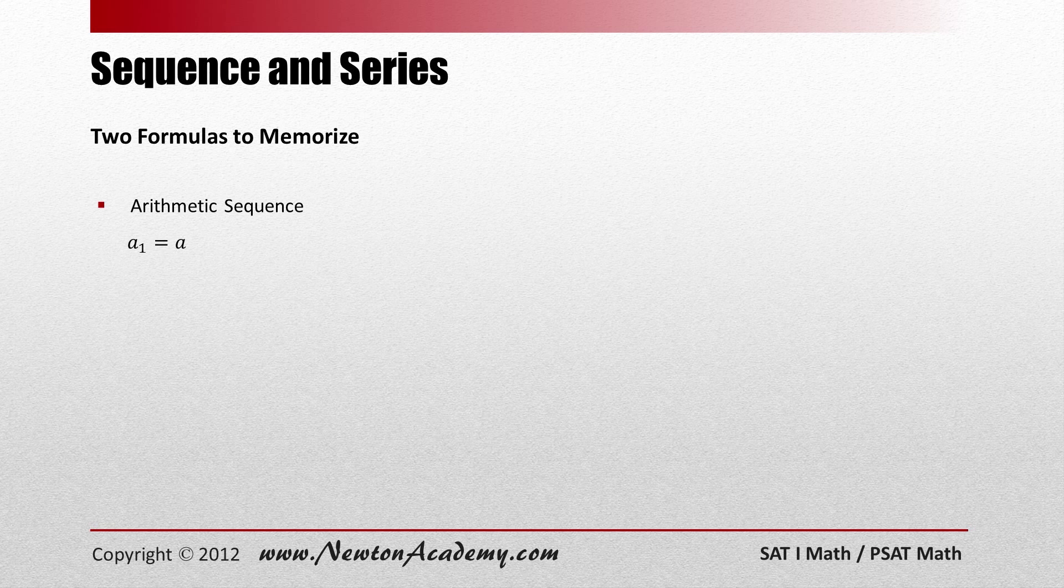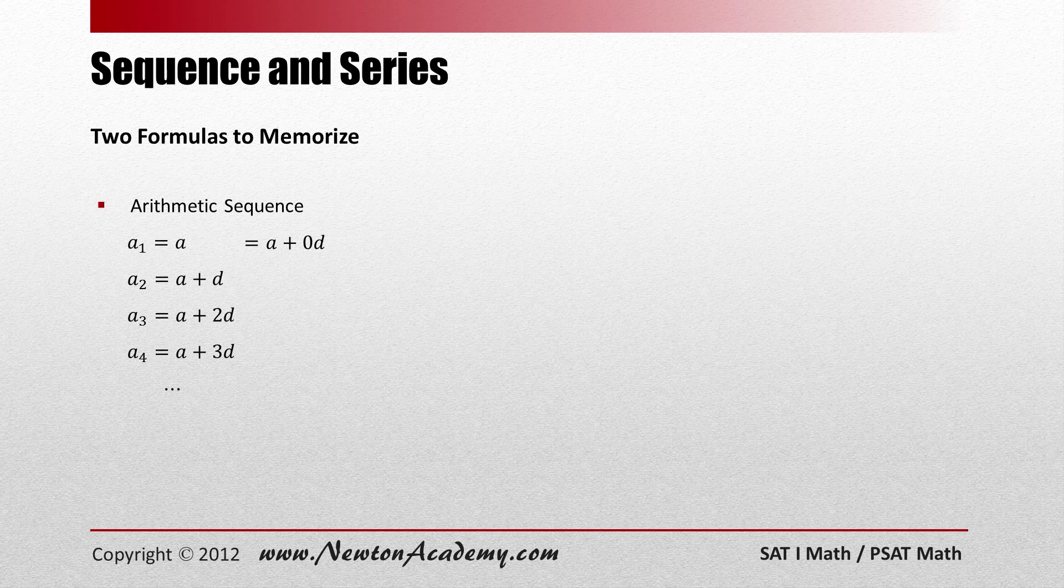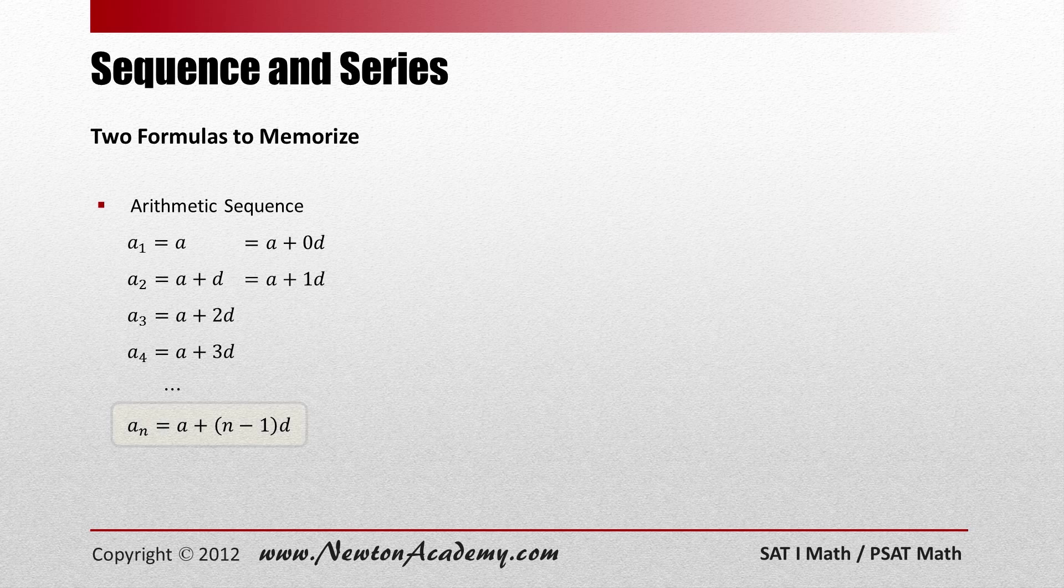Let's say that the first term is A. If you add a common difference D to that first term A, you get the second term. For the third term, you add another D to the second term. For the fourth term, you add another D to the third term and so on. Well, to be able to see the pattern more clearly, let's express this A sub 1 with A plus 0 D and A sub 2 with A plus 1 D. Then when this is 1, this is 0. When it's 2, this is 1. When it's 3, this is 2. When it's 4, this is 3. Now you see the pattern, right? The nth term A sub N is going to be A plus the quantity N minus 1 times D.